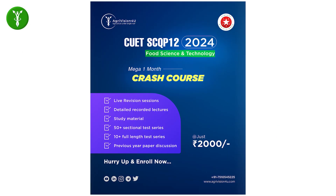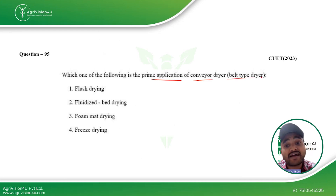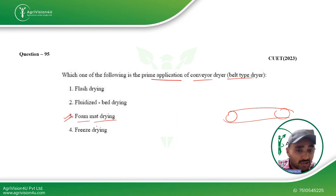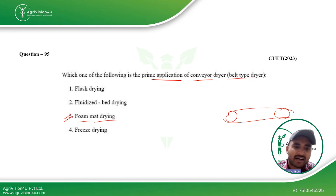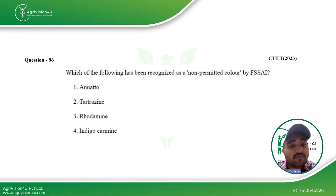Next: which of the following is the prime application of a conveyor dryer? A conveyor belt is used, and format drying is the right answer, because in the application of format drying, a conveyor (belt-type) dryer is the one used. The other options are not related to this.